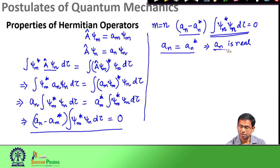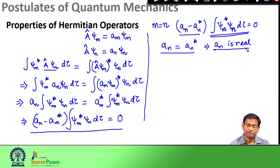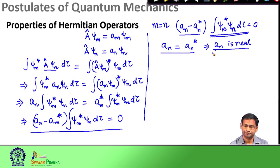This is actually not surprising because we derived the condition for Hermitian operators from the fact that eigenvalues are real. But this also tells us that if we have a Hermitian operator, the eigenvalues of the Hermitian operator are all real.